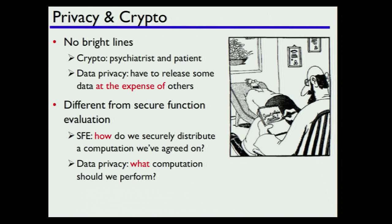This is very different from secure function evaluation — what's sometimes called privacy-preserving data mining in this community, introduced in a talk at Crypto 2000. Secure function evaluation roughly focuses on how to securely distribute a computation we've already agreed on. Whereas in data privacy, the question is which computation should we actually be distributing. I'll give some examples later of how starkly those two questions can differ.